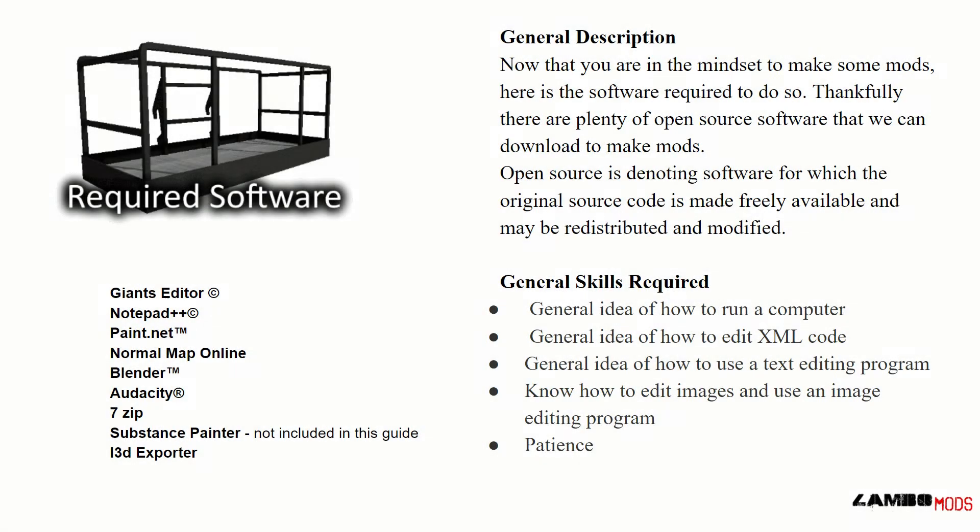Required Software — General Description. Now that you are in the mindset to make some mods, here is the software required to do so. Thankfully, there are plenty of open source softwares that we can download to make mods. Open source is denoting software for which the original source code is made freely available and may be distributed and modified. General skills required include a general idea of how to use a computer, a general idea of how to edit XML code, which we will cover later on, and a general idea of how to use a text editing program.